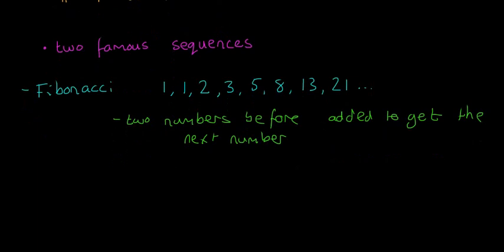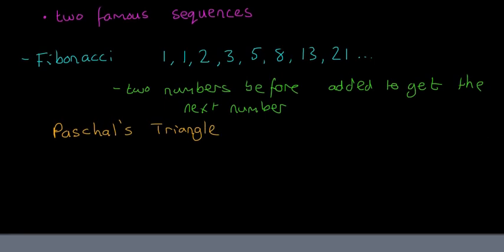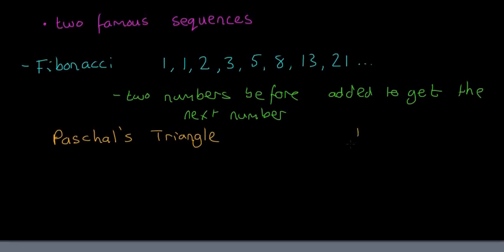The next one we're going to look at is called Pascal's Triangle. This is a bit of a weird one. It's going to go 1, 1, 1, 1, 2, 1, 1, 3, 3, 1, 1, 4, 6, 4, 1, and so on.